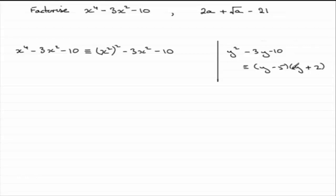Now, that means that if y is x squared then this is identical to two brackets being multiplied together. And we saw that it was y minus 5 so instead of y, y was x squared. So you've got x squared minus 5 and for y plus 2 you've got x squared plus 2. So x to the power of 4 minus 3x squared minus 10 can be factorized down to this.